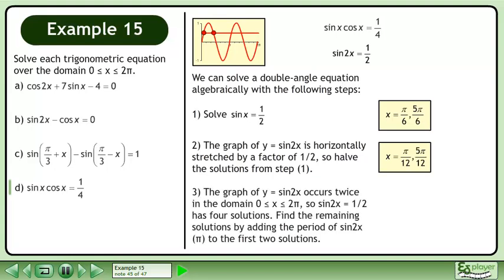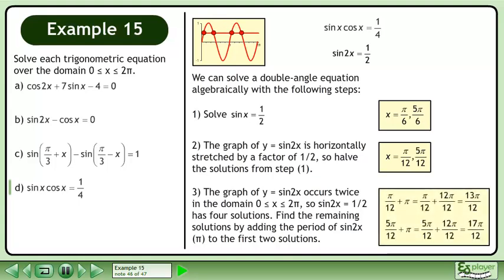The graph of y equals sin2x completes two full cycles in the domain where x is between 0 and 2pi, so sin2x equals one half has 4 solutions. Find the remaining solutions by adding the period of sin2x, which is pi, to the first two solutions. This gives us 13pi over 12 and 17pi over 12. Combining all results, the solution is x equals pi over 12, 5pi over 12, 13pi over 12, and 17pi over 12.